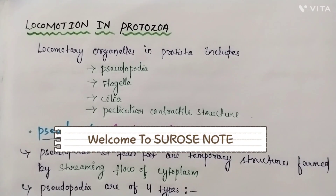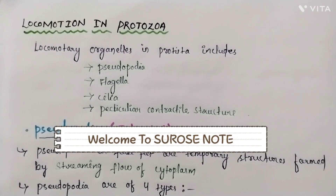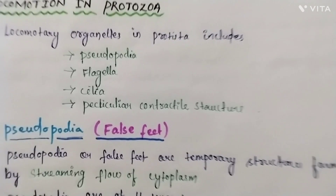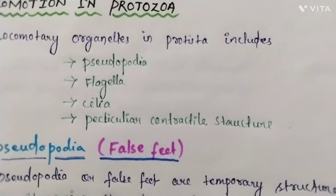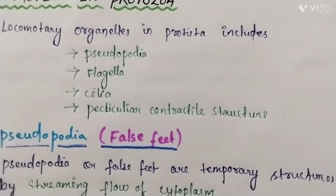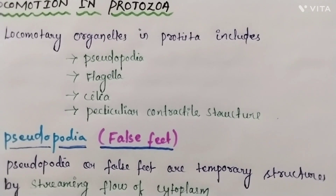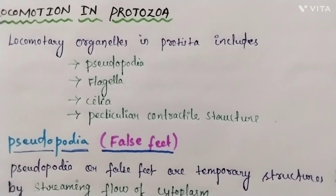Locomotory organelles in protozoa include pseudopodia, flagella, cilia, and pellicular contractile structures.